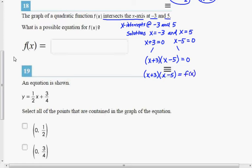This is pretty deep thinking. But the idea is that if you know the graph intersects the x-axis at negative 3 and 5, then you know that the equation for this must have solutions x equals negative 3 and x equals 5. And so this is an equation that has solutions of x equals negative 3 and x equals 5.